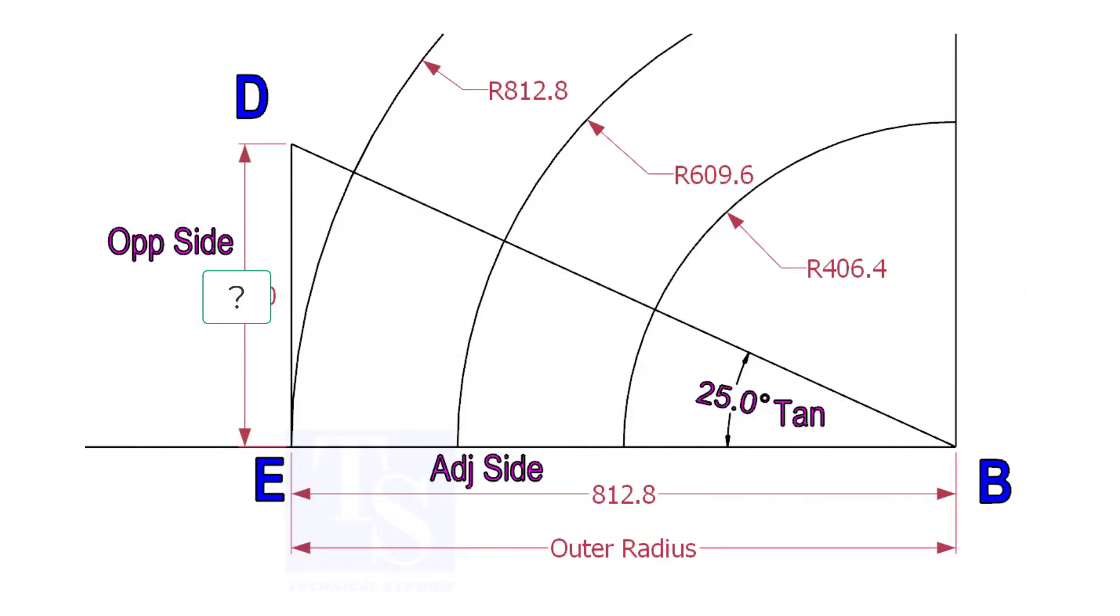Mark a line 25-degree rotated from the base line AB. To draw the line DB, we need to know the length of the line ED.